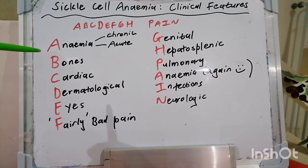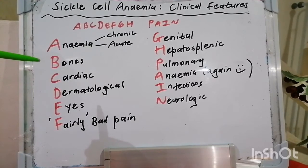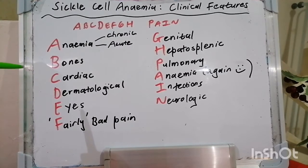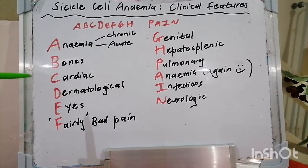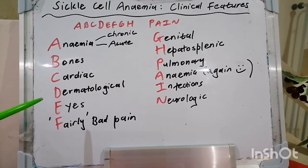B is for bones, where there's bony infarction which can lead to pancytopenia, avascular necrosis, fat embolism, and orbital compression syndrome. Cardiac issues include myocardial infarct due to increased oxygen demand from cardiac output — essentially a supply-demand mismatch issue. Dermatological issues present as leg ulcers, which are common among patients who have sickle cell anemia.